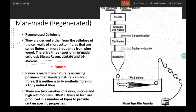Rayon is made from naturally occurring polymers that simulate natural cellulosic fibers. It is neither a truly synthetic fiber nor a truly natural fiber. Why? Because it is a combination of natural material and synthetic material. That's why it is not a truly synthetic fiber nor a truly natural fiber.